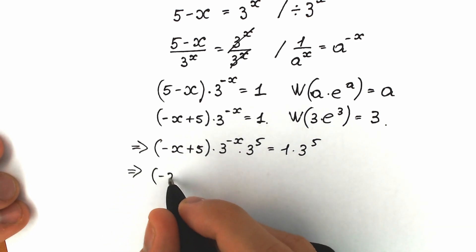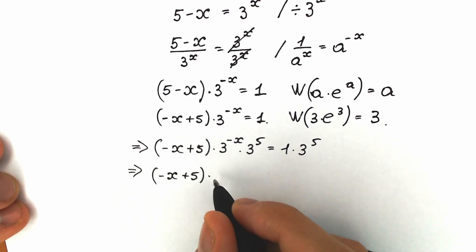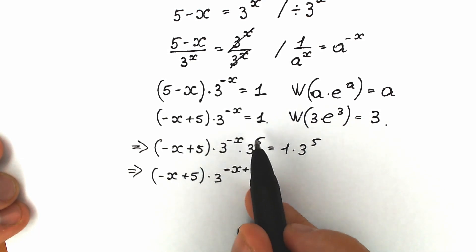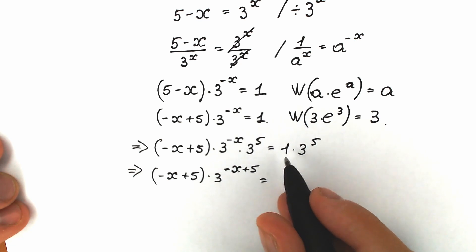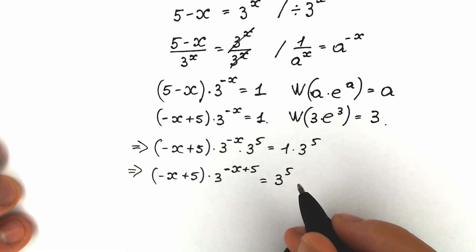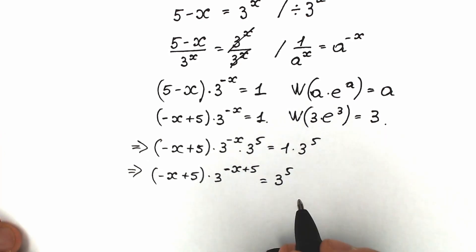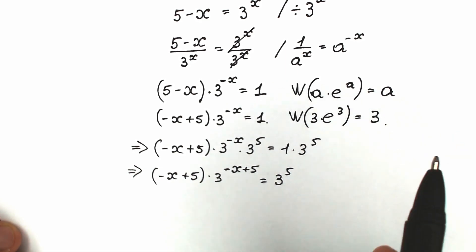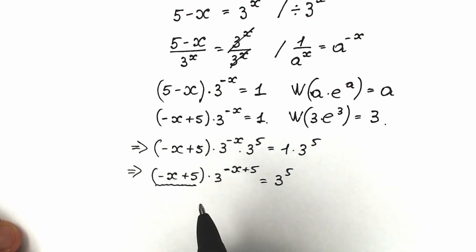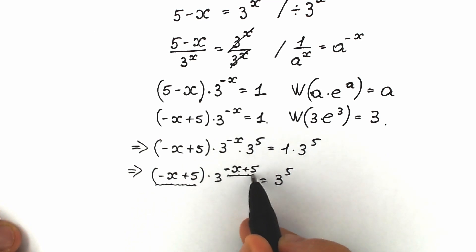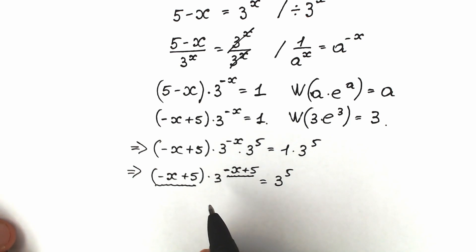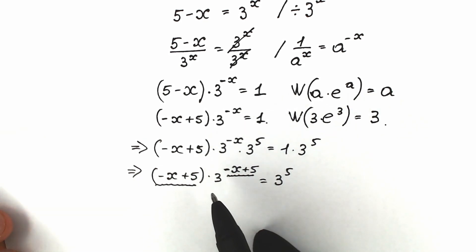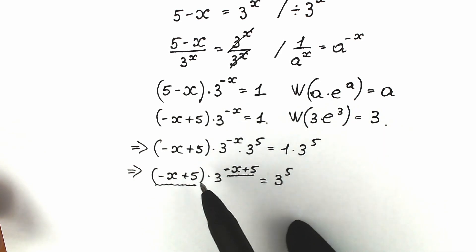So we have minus x plus 5 times 3 to the power of minus x plus 5 equal to 1 times 3 to the power 5, which is 3 to the power 5. Really great. Now if you look closely, we have absolutely the same expression in both the base factor and the exponent factor. It looks like this expression is ready for applying Lambert W function — but if you look closely, we need to have e, and here we have 3. So this is completely different and we need to create e.